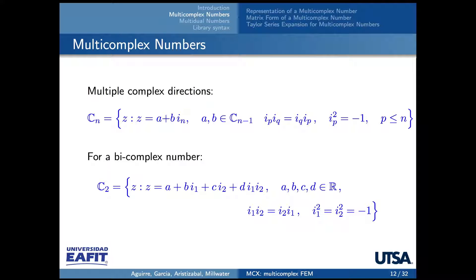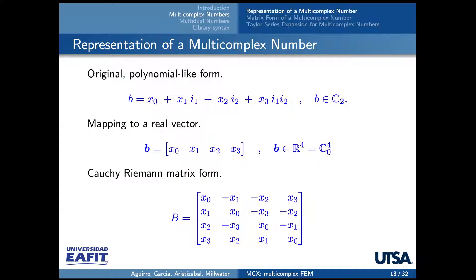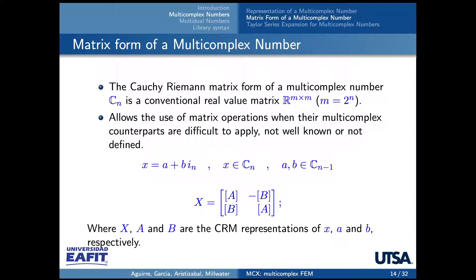Multi-complex numbers are an extension of the same concept to multiple imaginary directions. Instead of having just one imaginary number, we can have one, two, three, or n. As an example, a bi-complex number has two directions, i1 and i2, and a combined direction i1·i2, since i1 and i2 cannot be cancelled out. A multi-complex number can be represented in a polynomial-like form, a real vector form, or a matrix form. The advantage of the matrix form — called the Cauchy-Riemann matrix form — is that there is an isomorphism between matrix operations and multi-complex operations, so we can operate on multi-complex numbers by operating on matrices. The Cauchy-Riemann matrix form can be found for any order of multi-complex number.